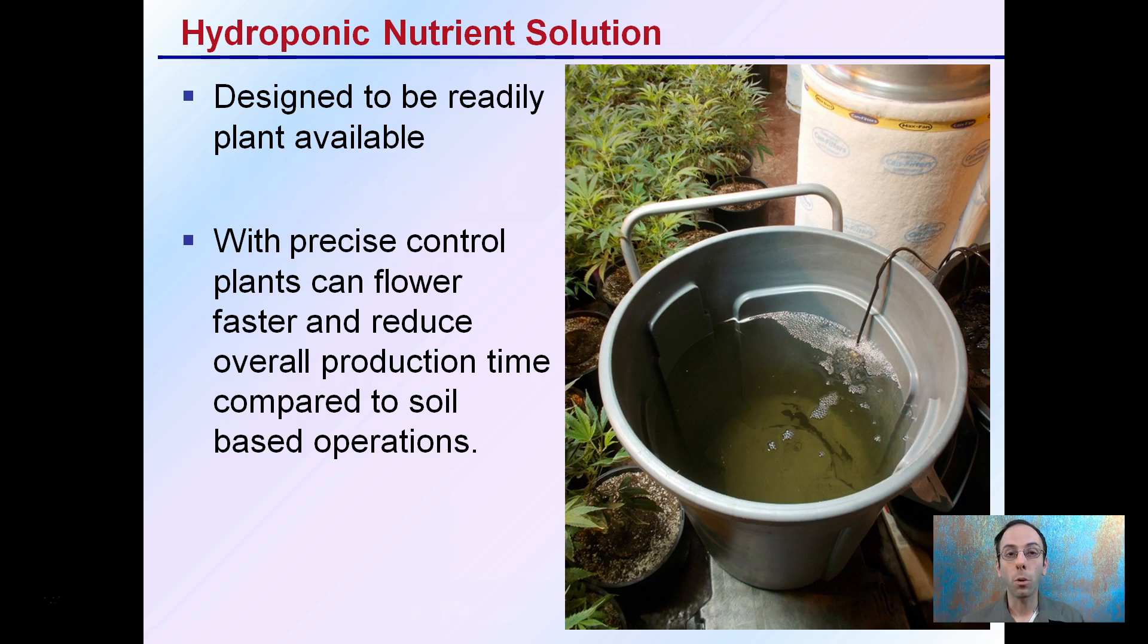As a result, especially with hydroponics, we want to be mindful of the pH that we are creating within that solution to make sure not only is it being directly applied to the plants and available very quickly, but it's in the pH range that helps or facilitates that uptake.